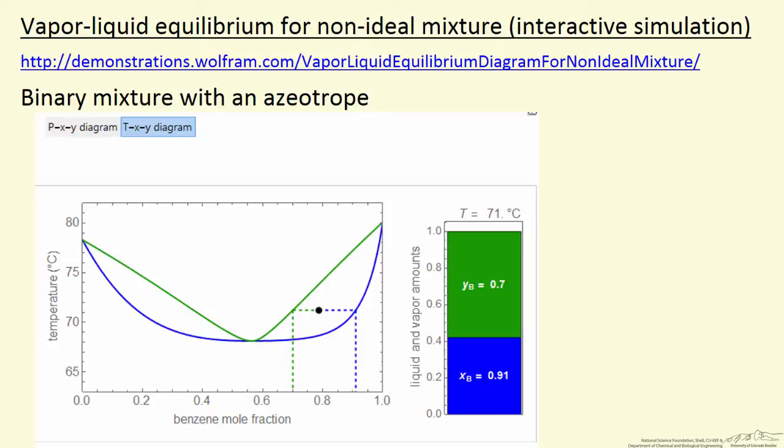I'm going to describe an interactive Mathematica simulation that's available on the Wolfram Demonstration Project website. This is for vapor-liquid equilibrium and the liquid is sufficiently non-ideal that we have an azeotrope.